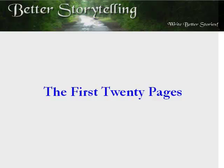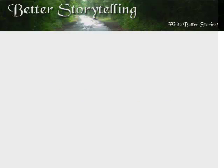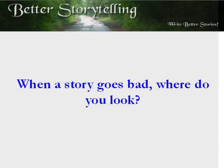It's quite easy to break a story. After all, there are literally hundreds of decisions that have to be made while composing a novel or screenplay. With so many ways to destroy a good story, it can be difficult to discover what went wrong. So when a story goes bad, where do you look? The most important part of your story is contained within the first 20 pages. If your story is broken, go back and look at the beginning of the story, because there are so many things going on when the story opens.